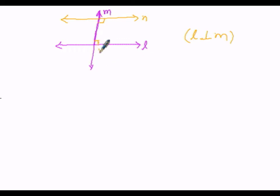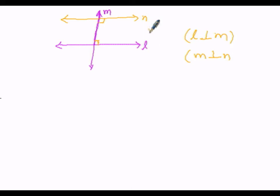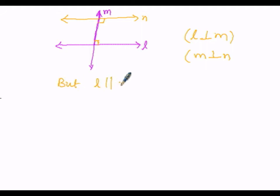Therefore we can write: M is perpendicular to N. But when we observe L and N, for the relation to be transitive, L must be perpendicular to N. However, L and N are not perpendicular — they are parallel.